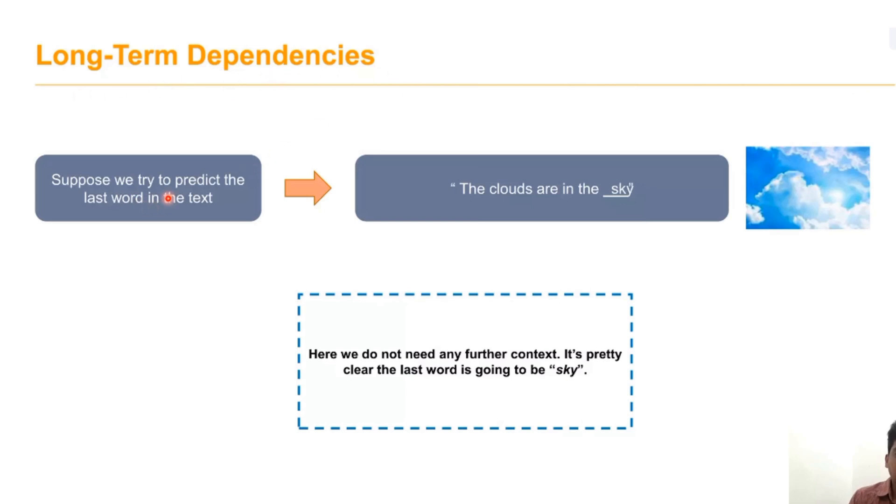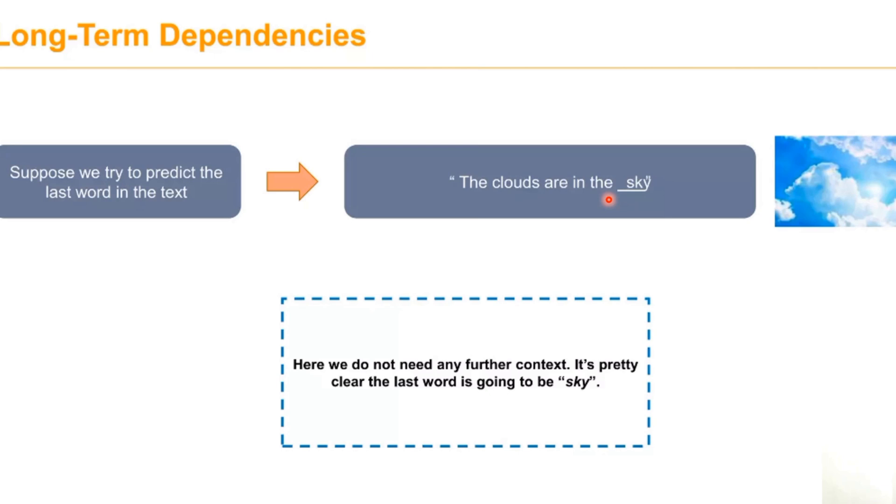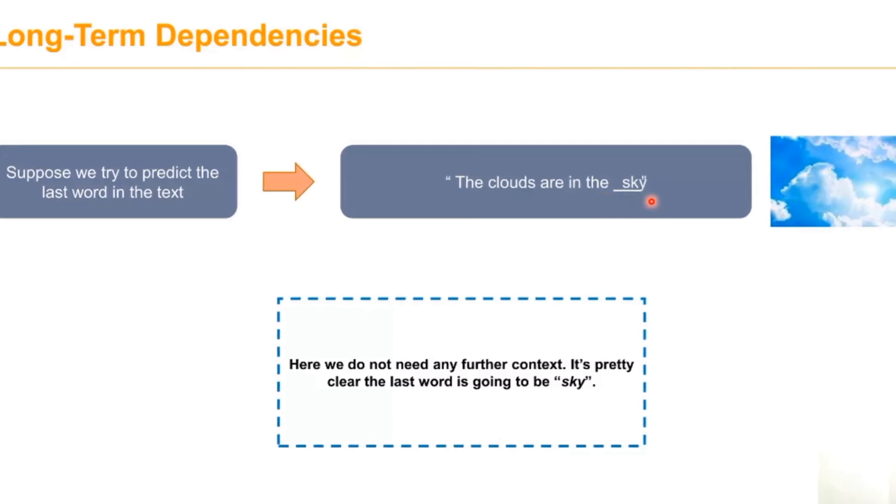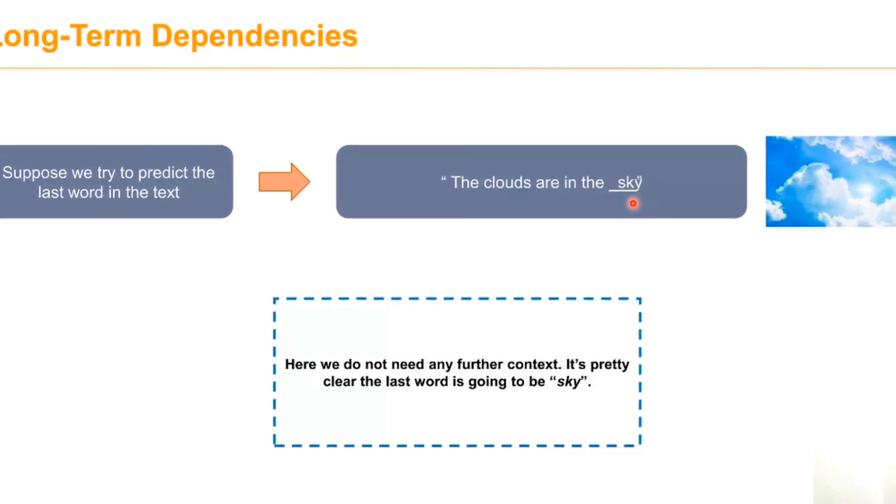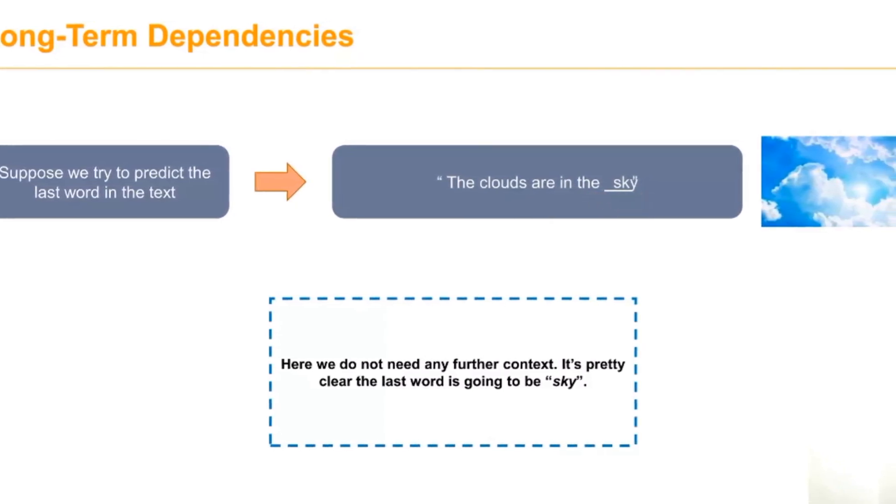Suppose we try to predict the last word in the text: 'The clouds are in the...' We don't need any further context. It's pretty clear the last word is going to be 'sky'. This is about long-term dependency.